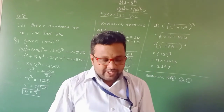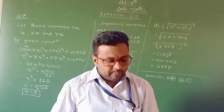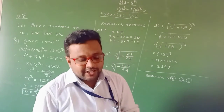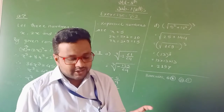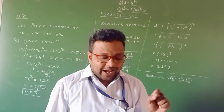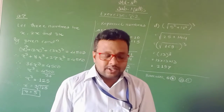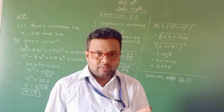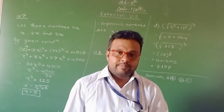Question number 7 is given. This is a word problem: 3 numbers are in the ratio 1 is to 2 is to 3. The numbers are given in the ratio, and the sum of their cubes is 4500. Find the numbers.